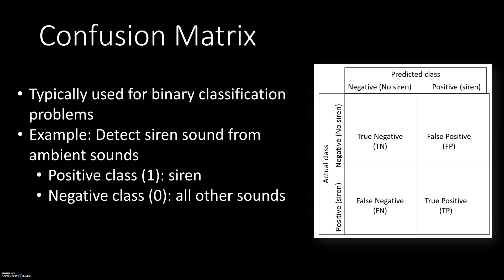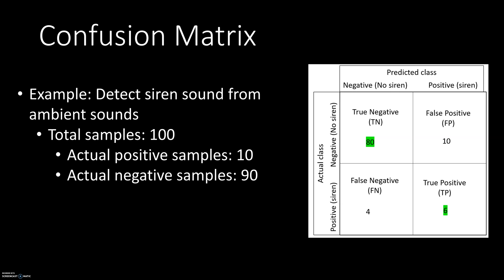On the opposite diagonal we have false negatives and false positives. A false negative is where a sample actually belongs to the positive class but the model incorrectly predicts it as negative. Similarly, a false positive is where the sample actually belongs to the negative class but the model incorrectly predicts it as positive.